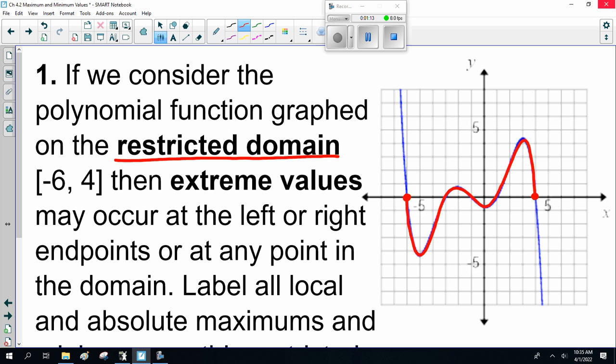Now, extreme values, maximums and minimums. Let's do the easy ones. The absolute maximum is the highest point on the graph. Where's the highest point on the graph? Right here. This is the absolute maximum.